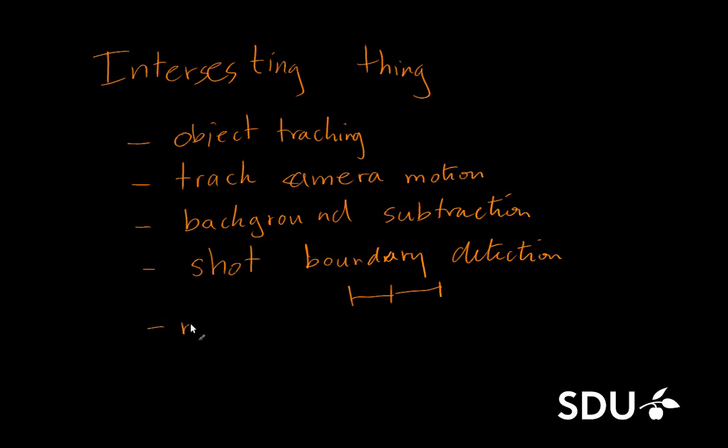And finally, sometimes you also want to do motion segmentation. And motion segmentation is to figure out which part of the scene is moving in a similar way. So these are some of the things that you might want to extract from a video. The lecture today will mainly focus on this part about object tracking.